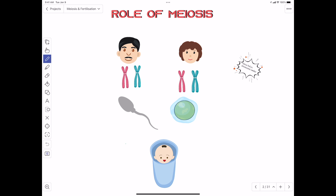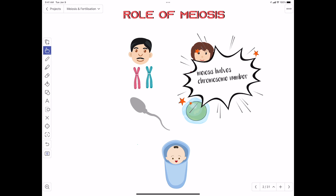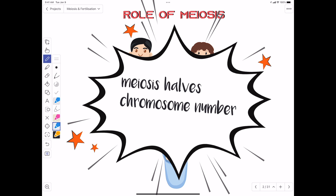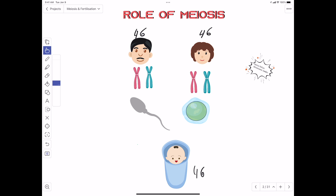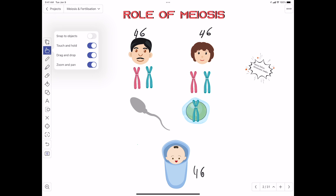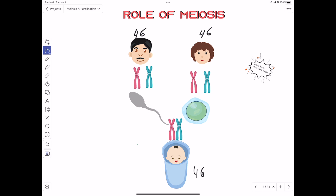Let's start with the significance of meiosis. The main reason why meiosis happens is that we need to have the same number of chromosomes as our parents. Meiosis's job is to make sure that every generation has the same number of chromosomes. So during meiosis the number of chromosomes is halved, and when the gametes — the egg cell and the sperm — fuse during fertilization, we restore the diploid number of 46 chromosomes.